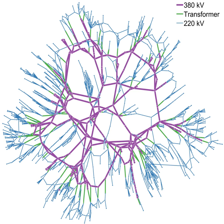An electrical grid, or electric grid, is an interconnected network for delivering electricity from producers to consumers.